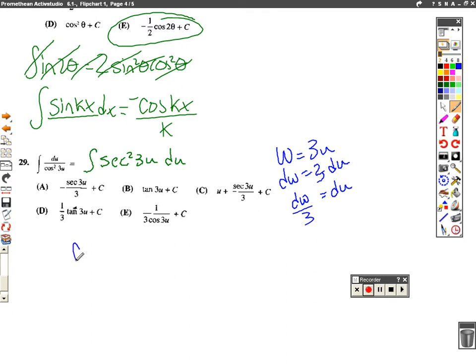So, this really becomes the integral of secant squared of u times dw over 3. Sorry, secant squared of w times dw over 3. And that just basically becomes 1 third times the tangent of w plus c, which is 1 third. Tan of w would be the tan of 3u plus c.